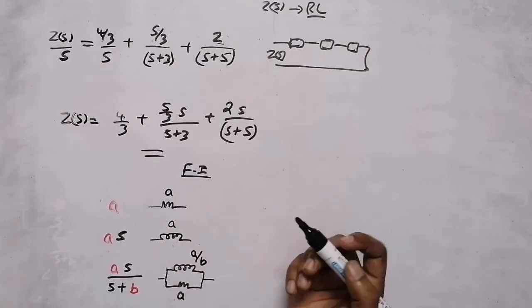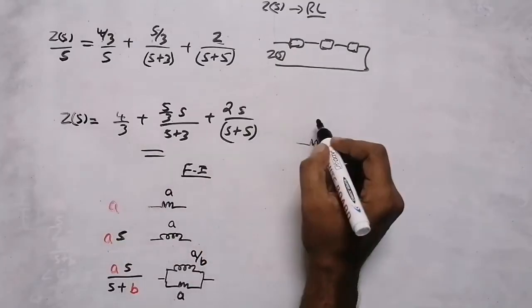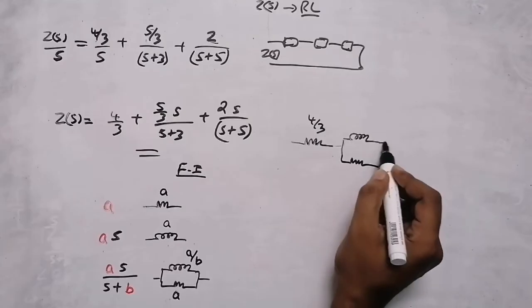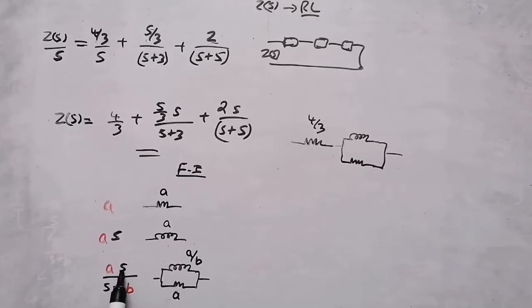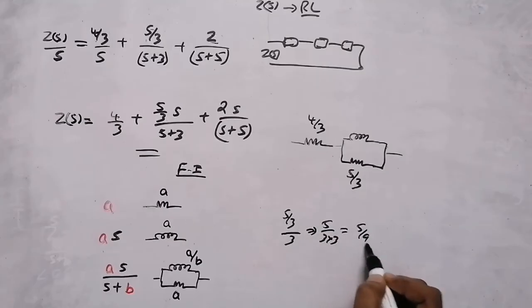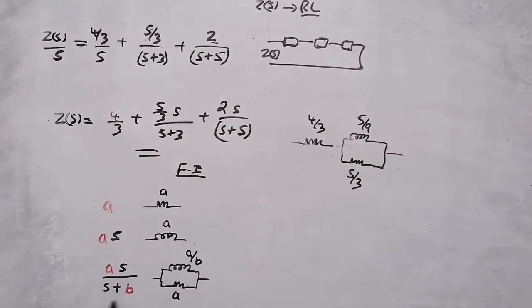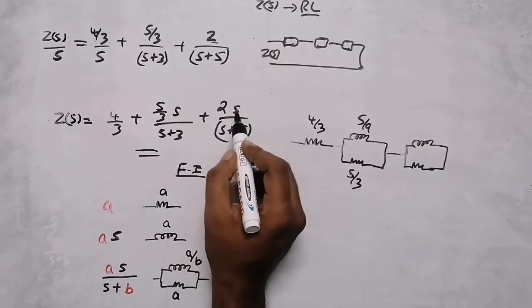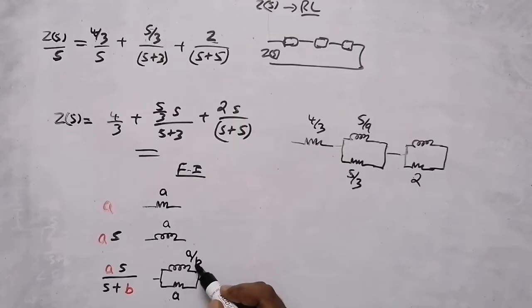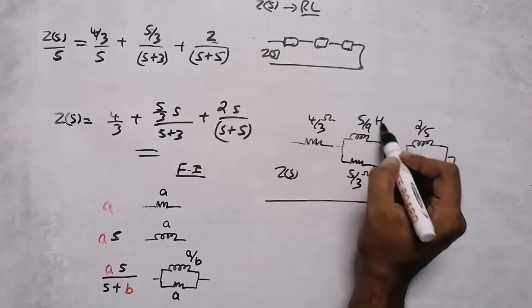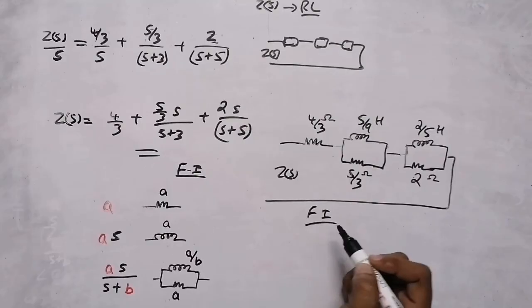In this question we need Foster Form 1. The first term, 4/3, is only a constant, so it is a resistor with value 4/3 ohms. The second term is a combination, so there is a parallel combination of inductor and resistor. The resistor value is the coefficient near s, which is 5/3. The inductor value is A by B, that is 5/3 divided by 3, giving 5/9 henry. For the third combination, the resistor value is 2 ohms and the inductor value is 2/5 henry. All connected in series — this is our Foster Form 1 network.